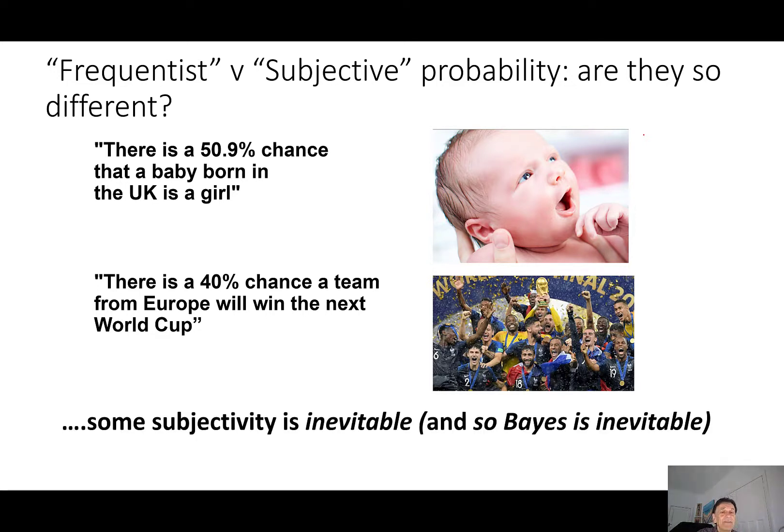Whichever way you look at it, some subjectivity is inevitable. And that's why Bayes, which is based on subjective conditional probabilities, is kind of inevitable in any risk assessment.